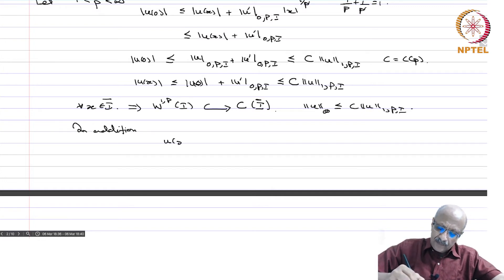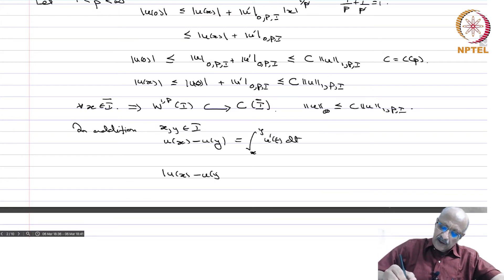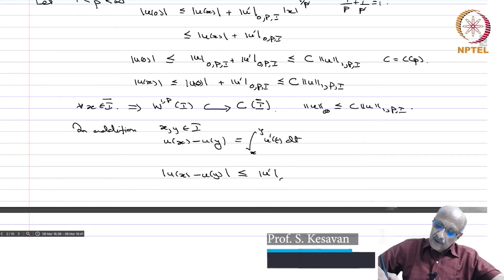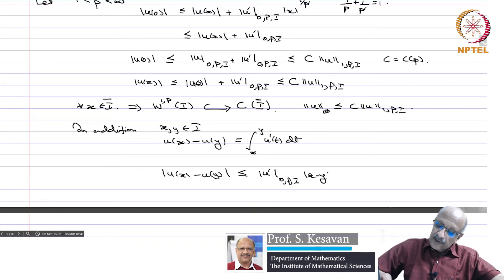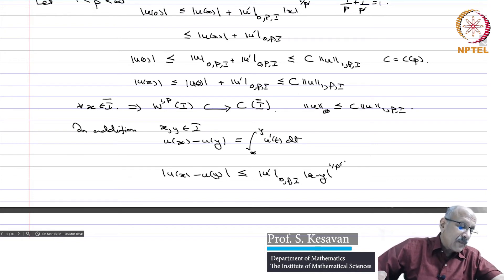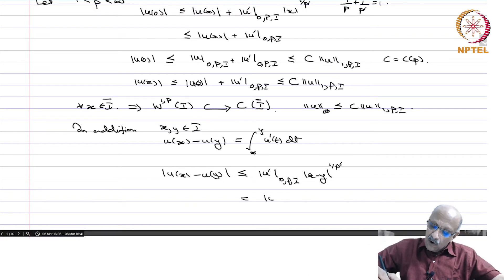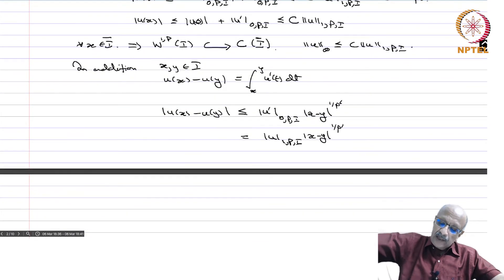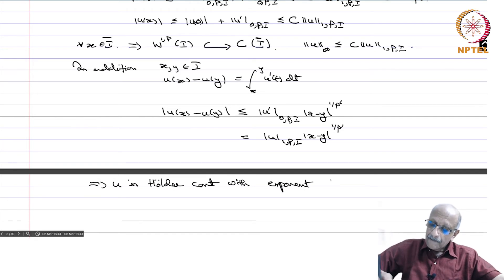In addition, then we have u(x) minus u(y) for x,y in I. u(x) minus u(y) equals integral x to y of u'(t) dt, and again by Holder's inequality you have |u(x) minus u(y)| is less than or equal to |u'|_{L^p(I)} times |x minus y|^{1/p'}. That equals ||u||_{W^{1,p}(I)} times |x minus y|^{1/p'}. This means that u is Holder continuous with exponent 1/p'.